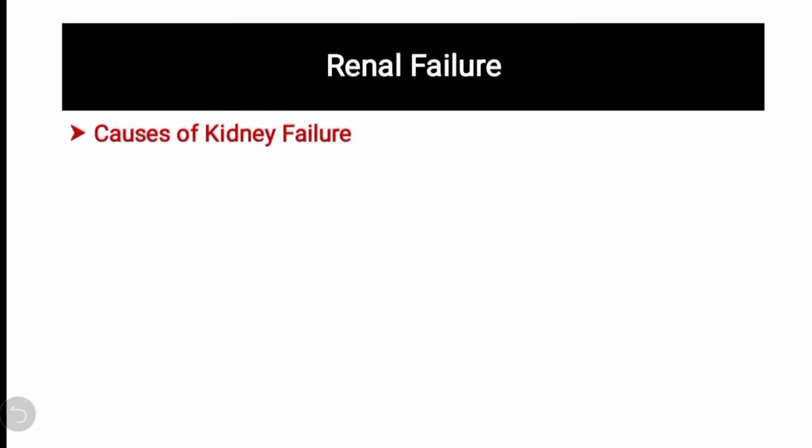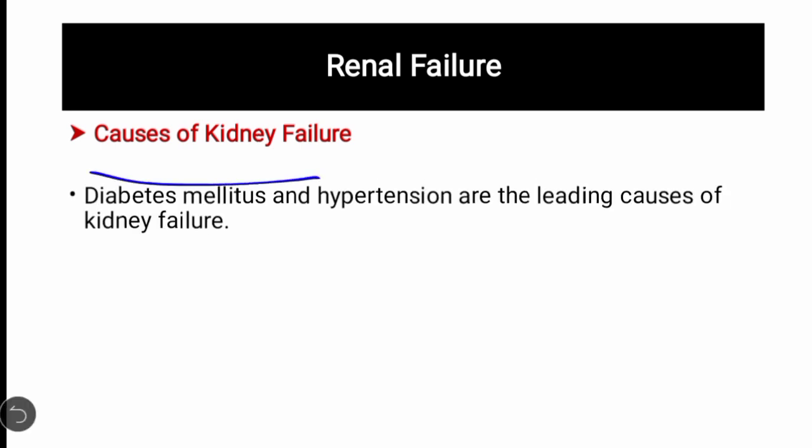Renal failure یعنی kidney failure — جب دو kidneys میں سے ایک بھی کام کرنا چھوڑ دے تو اس کو renal failure کہتے ہیں۔ When your kidney stops working یا blood کو صحیح طریقے سے filter نہ کر پائے، اس condition کو renal failure کہتے ہیں۔ اس کی causes میں پہلی ہے diabetes mellitus۔